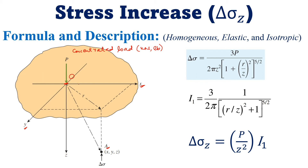Point A will have a distance of x units along the x-axis, y units along the y-axis, and z units of depth. The depth z is measured from the load point on the surface of earth down to the point where we are going to calculate the stress increase. This stress increase is normally denoted by delta sigma z, meaning the change in stress at depth z.